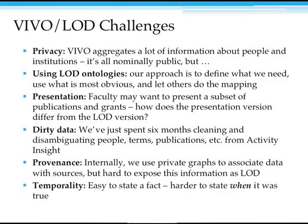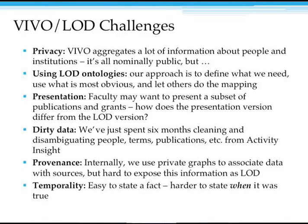Another challenge is combining our stuff with other linked open data ontologies. We do highly granular sets of relationships and information. Our approach is to pick things that are really obvious to extend and use, make our own information available, and if other people want to use it, they can do the mapping from our detailed and published ontologies. There's also an interesting presentation challenge — faculty often want to give a selected list of publications or suppress certain grants, but right now we're making everything available as part of the linked open data.